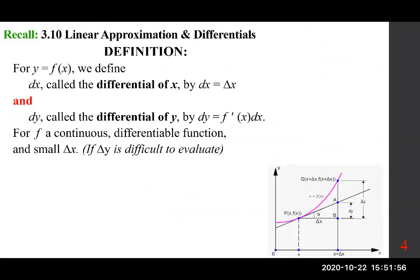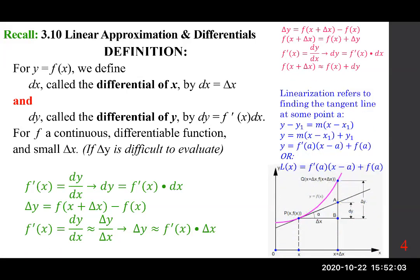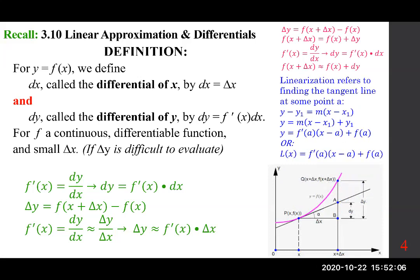We previously looked at differentials — the idea of delta y versus dy — and how f of x plus delta x can be approximated using linearization, which simply means finding the equation of a tangent line. Delta x is the run, delta y is the rise along the curve y equals f of x, and dy is the rise along the tangent line.